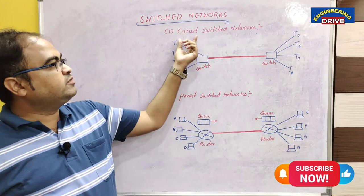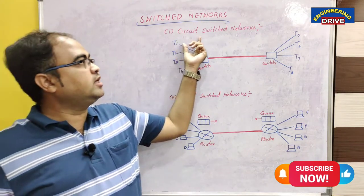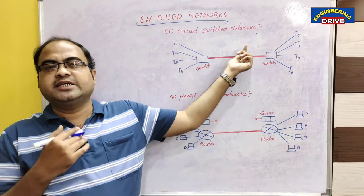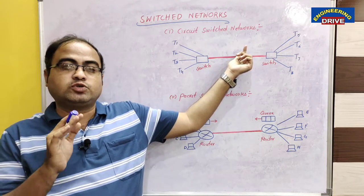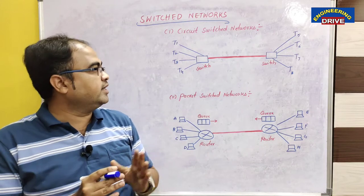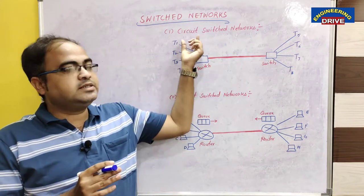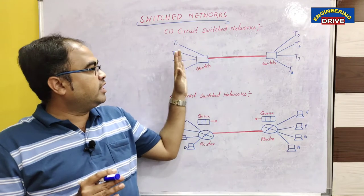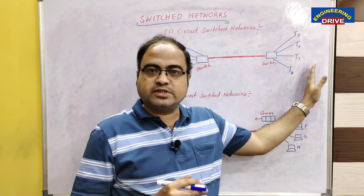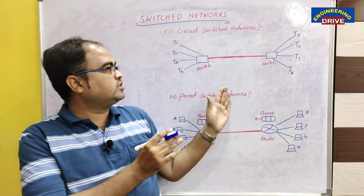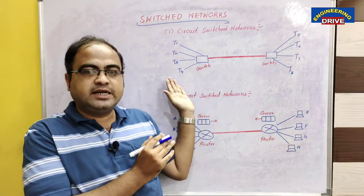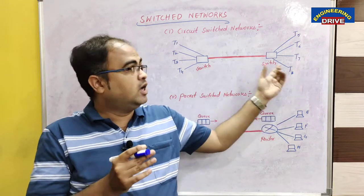Let me first concentrate on the circuit switch network, which is an old, traditional methodology usually employed in telephone systems. To explain circuit switch networks, I have taken four telephones at the sender side and four telephones at the receiver side, so we have eight telephones total, and I want to establish communication among them.